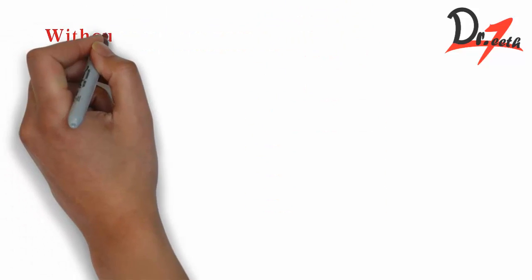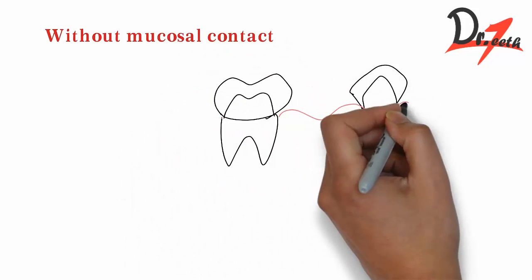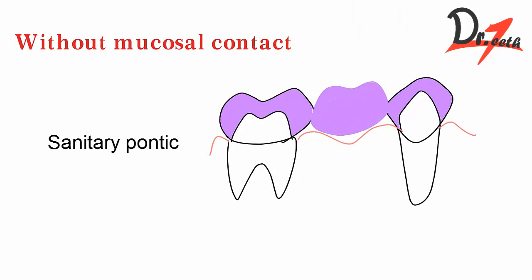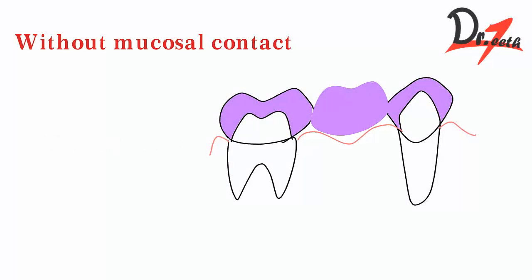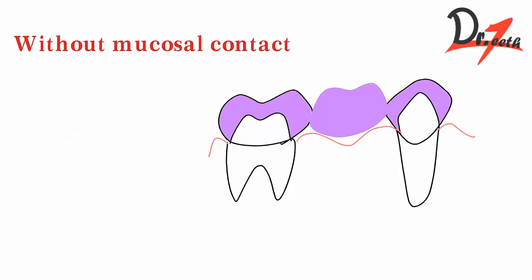Without mucosal contact there are two types: sanitary and modified sanitary. In sanitary, it is designed for easy cleansing and no pontic contact with residual ridge. The occlusal gingival height of pontic should be more than 3 mm and it should be easy to clean. Modified sanitary pontic has mesiodistal concavity. This is an alternate design with added strength for connectors and easy cleansing.